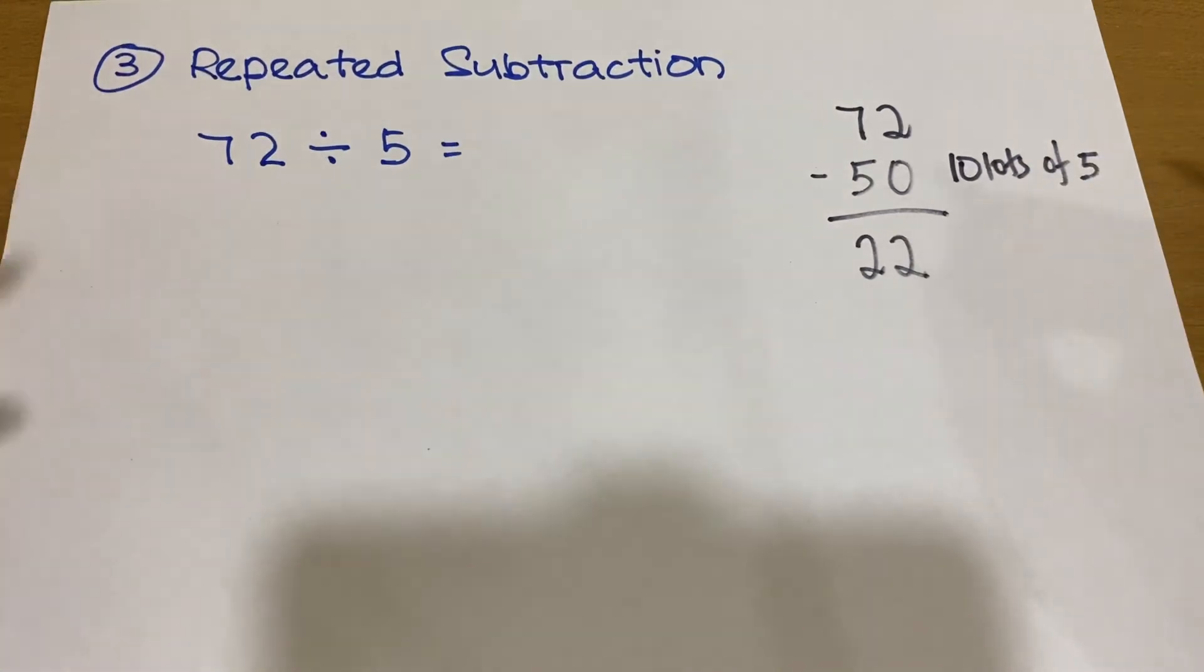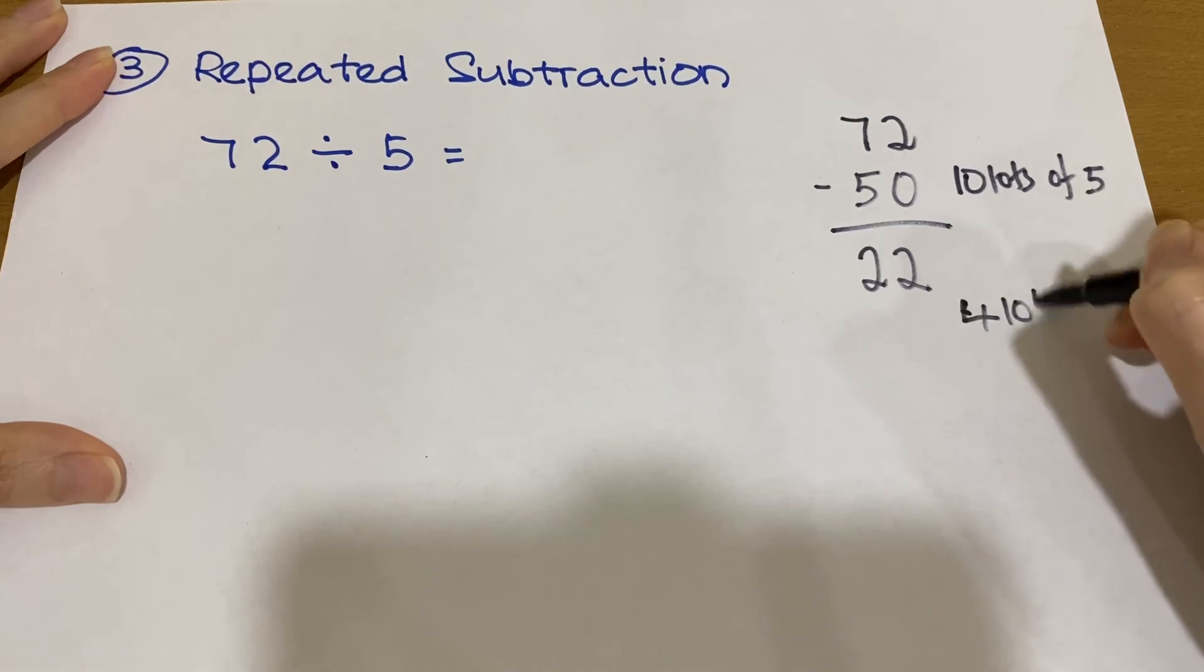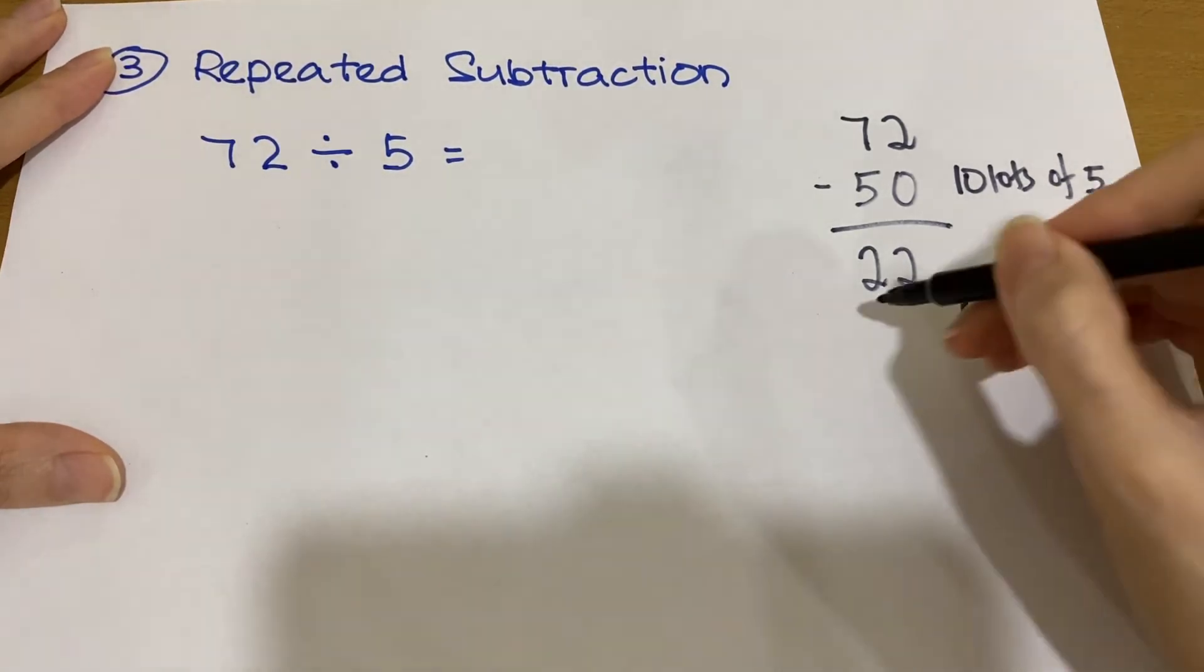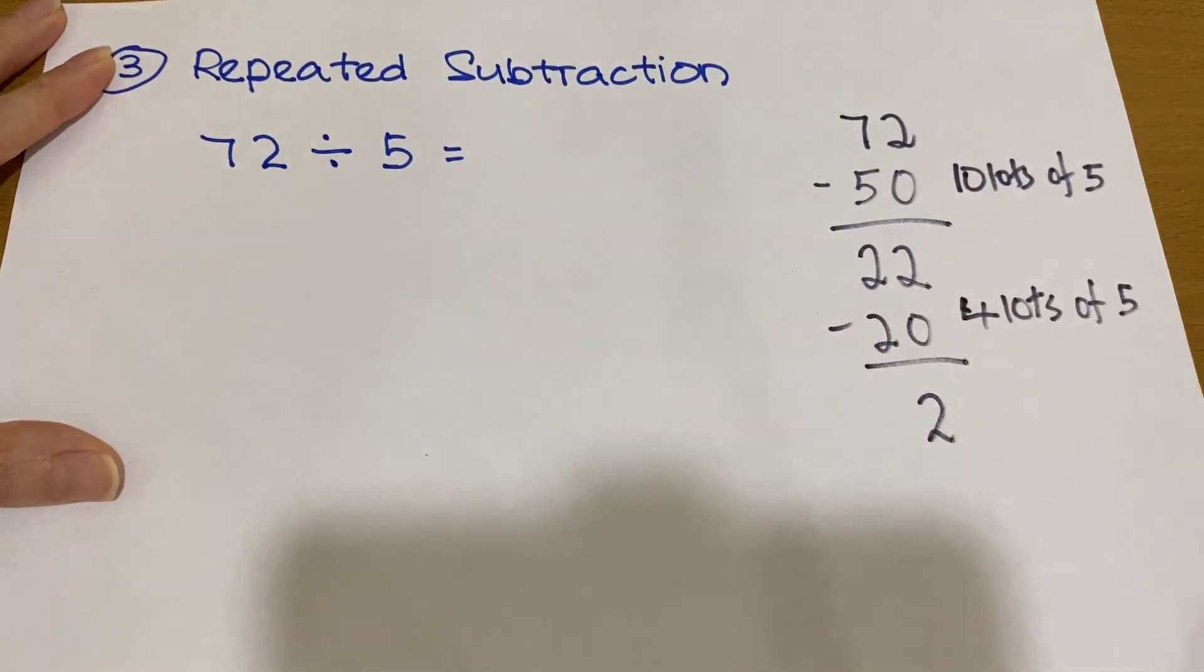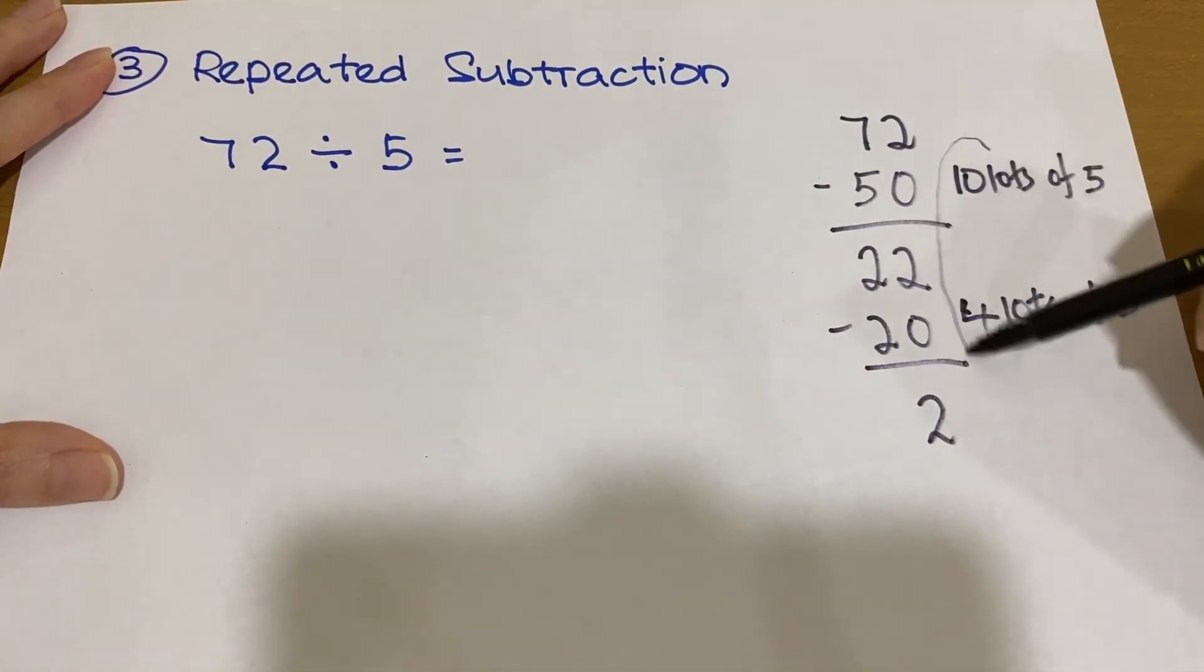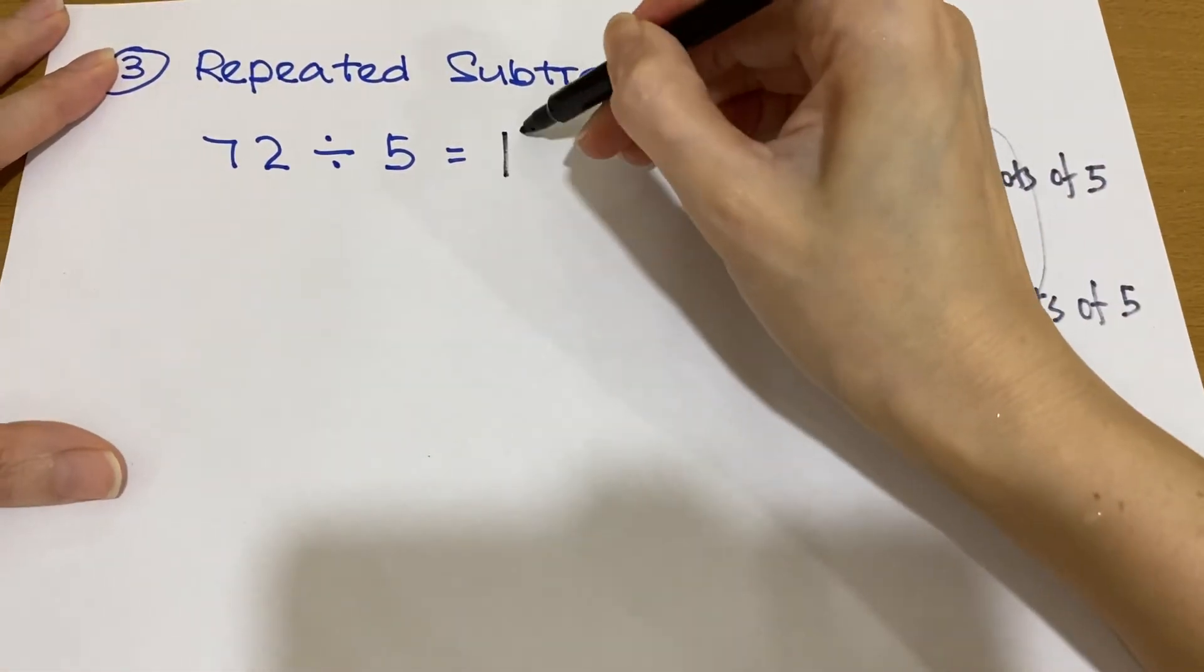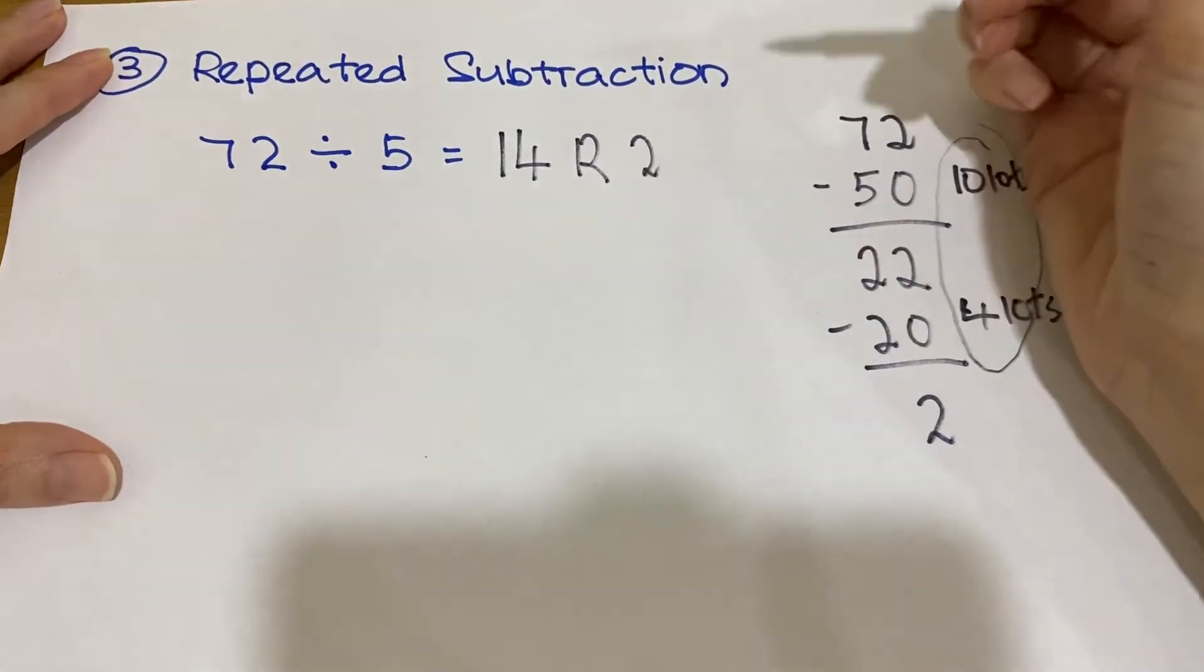From 22 here, we know that 4, 5 is 20. So if we have 4 lots of 5, 4, 5, 20, minus 20 again, we will have balance 2. From here, 10 lots plus 4 lots, we have 14 lots. So we know that the answer will be 14 with the remainder 2.